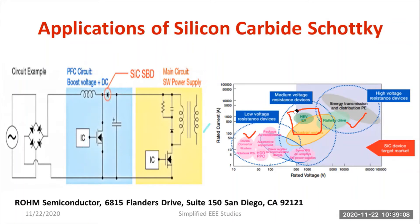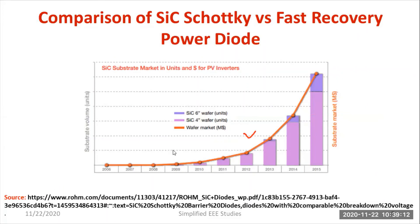Regarding market availability, the day-by-day usage of silicon carbide diode is getting increased. You can see tremendous growth compared to 2006. By 2015, there is tremendous demand for SiC diodes, especially for PV inverter design. Apparently, cost is also getting reduced and minimized, as we can observe based on US dollar values.